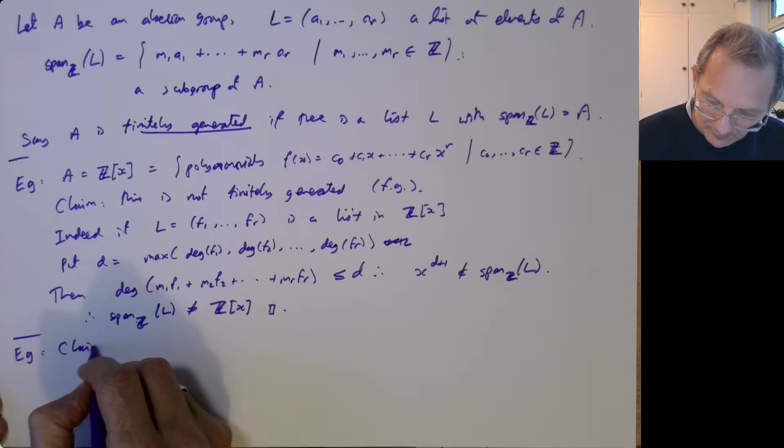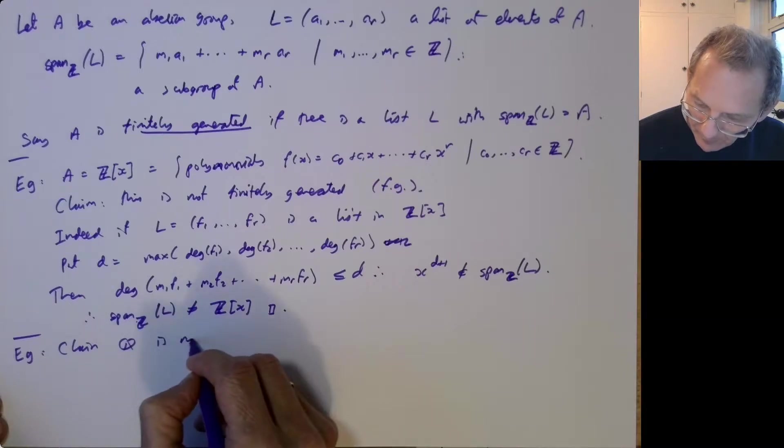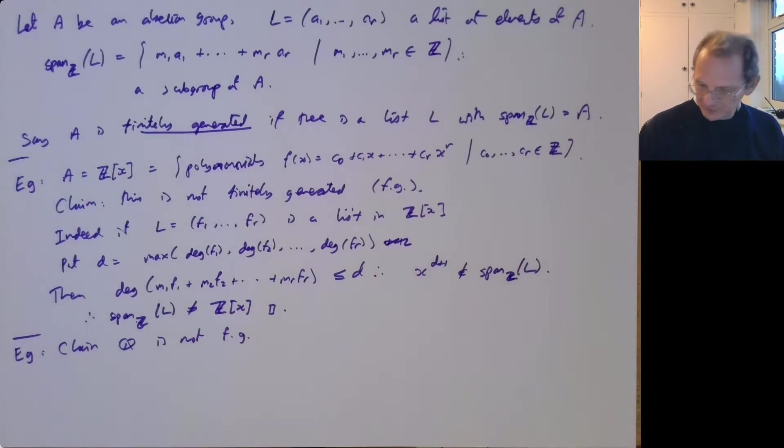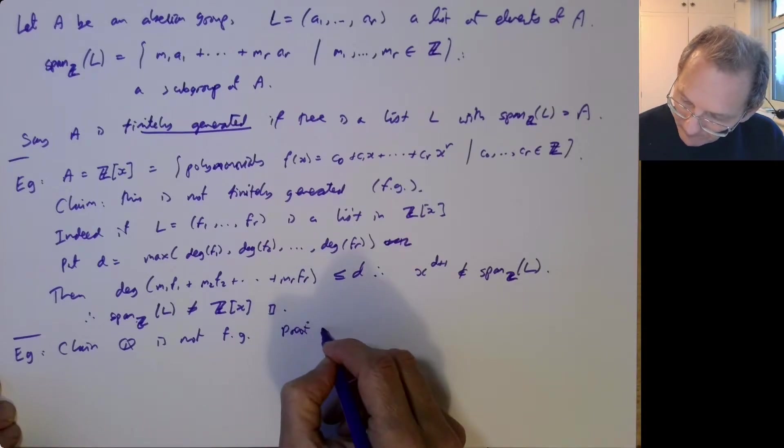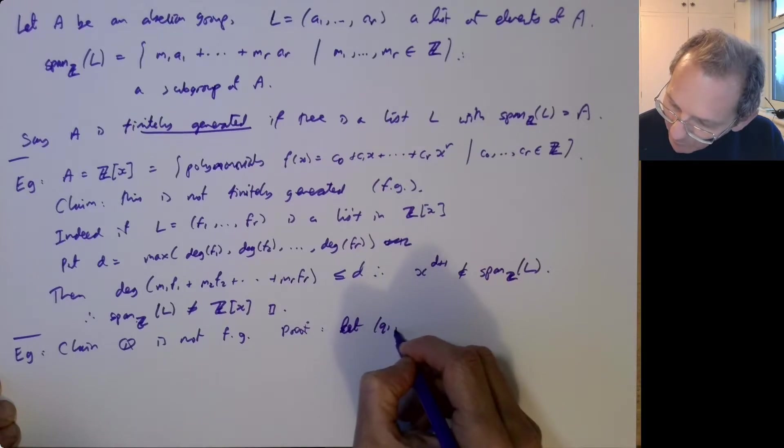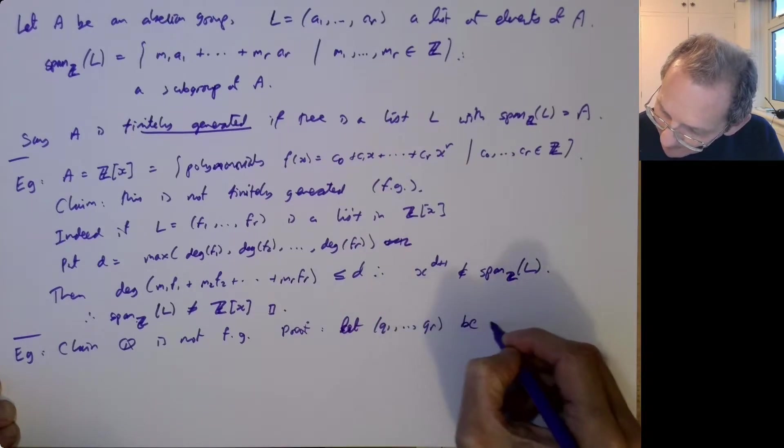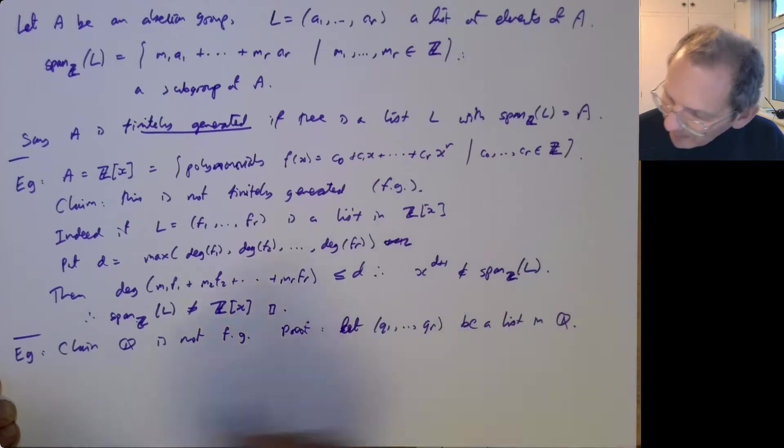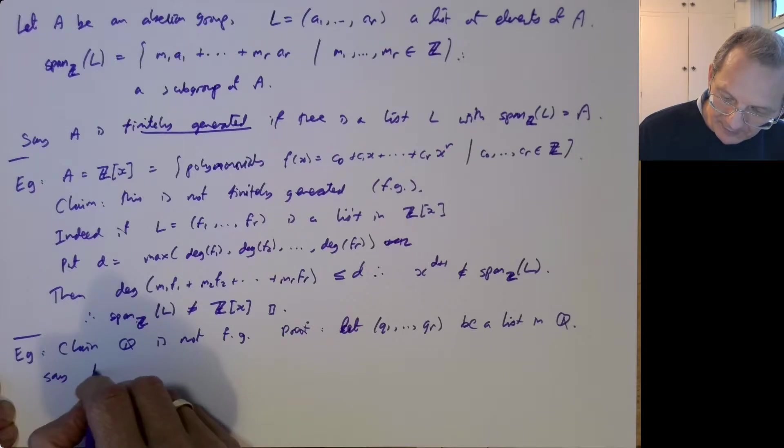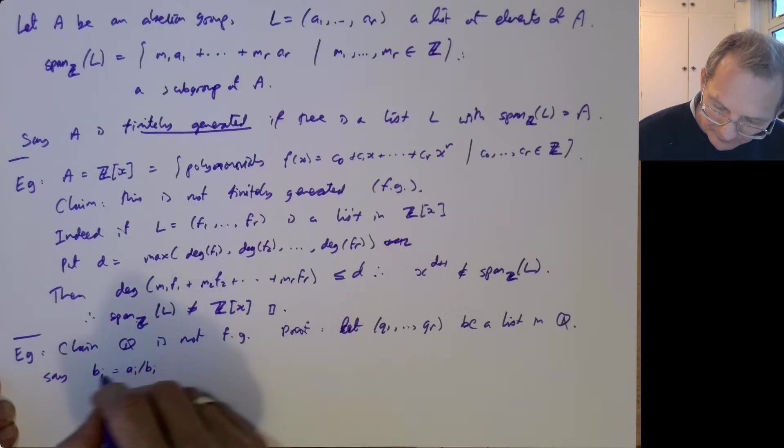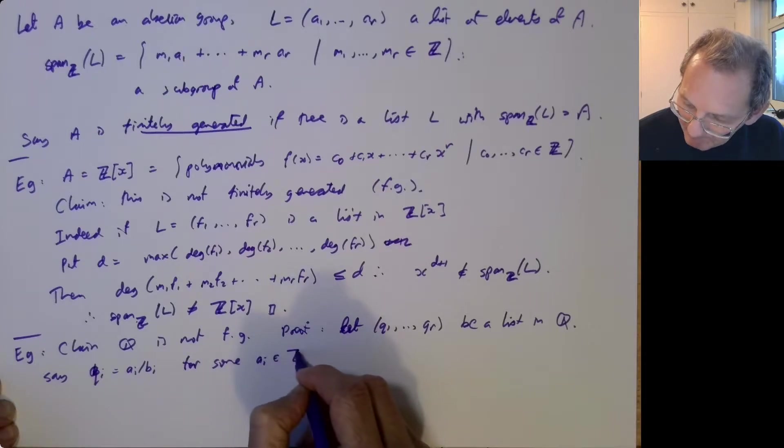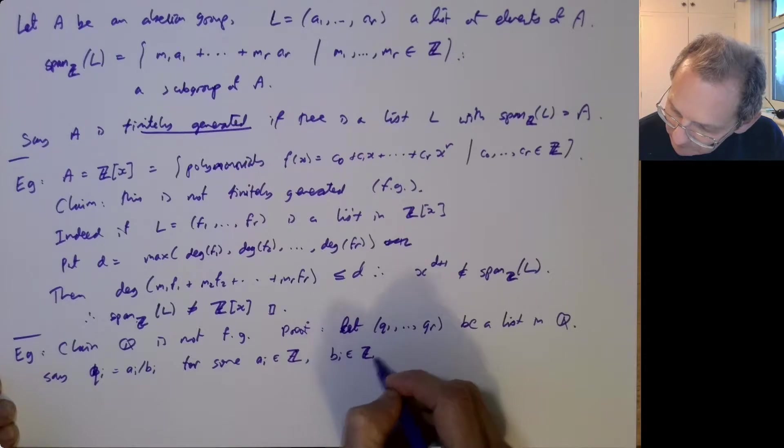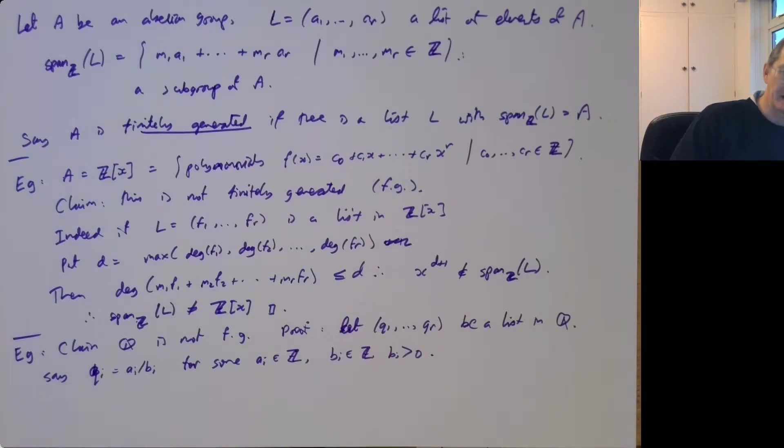I claim that Q is not finitely generated. Q, of course, that's the rationals, that's a group under addition as well. So let Q1 up to QR be a list in Q. QI can be written as AI over BI with AI and BI integers and BI strictly positive.